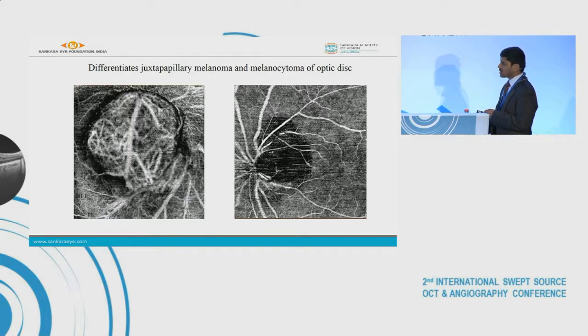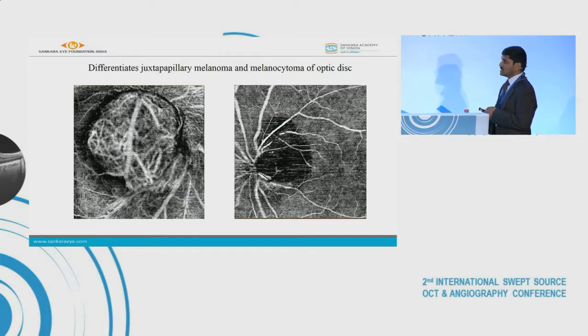There is no overlying RPE or other retinal tissue to obscure its visualization. So OCTA definitely plays a very good role in understanding the vascularity in superficial tumors compared to deep tumors.